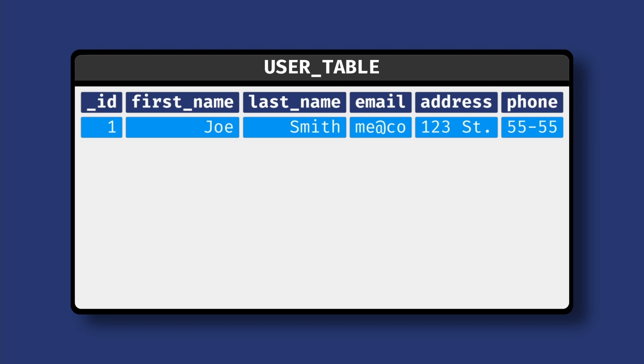Each row is a record and each column is a record field. In this example, we're storing user data. We have an ID, first name, last name, email address, physical address, and phone number.